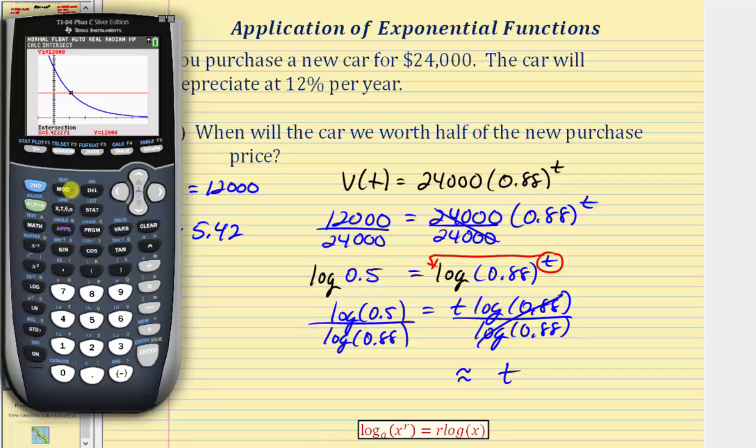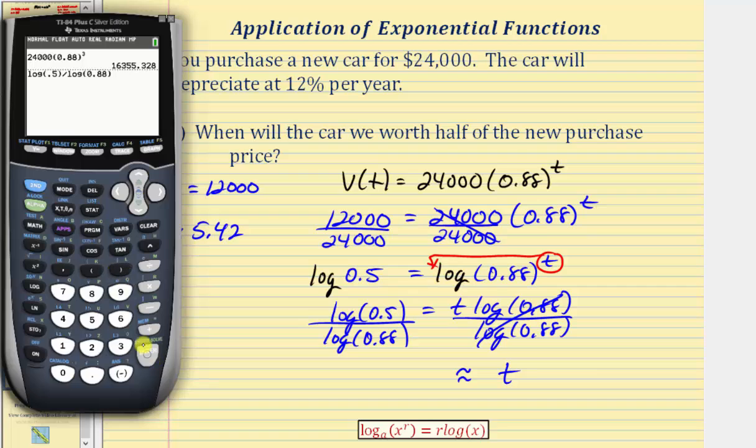So we'll go back to the home screen and we have common log of one-half or 0.5 divided by common log of 0.88. Enter. And notice how we do get the same value for t, approximately 5.42.